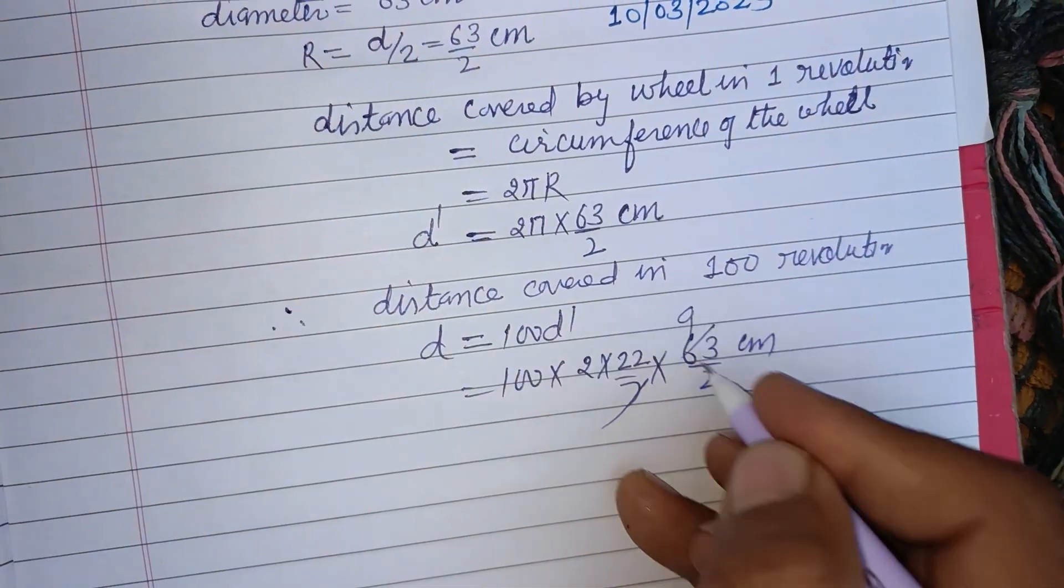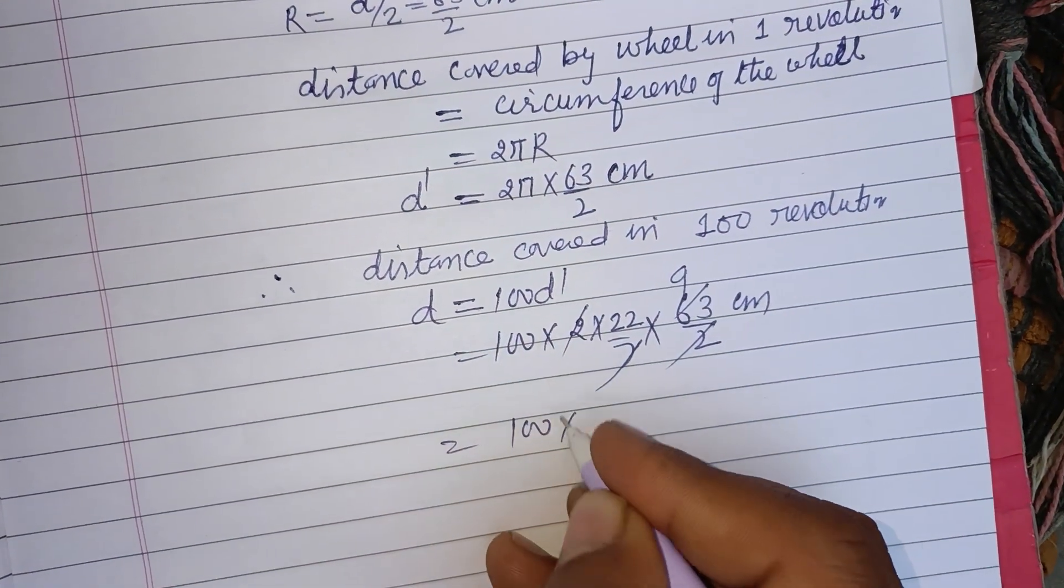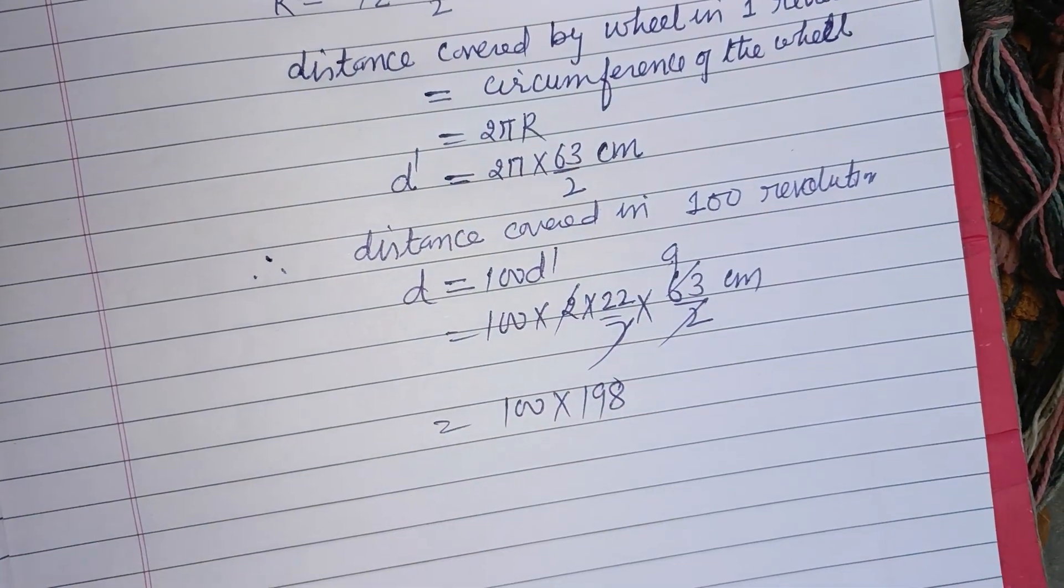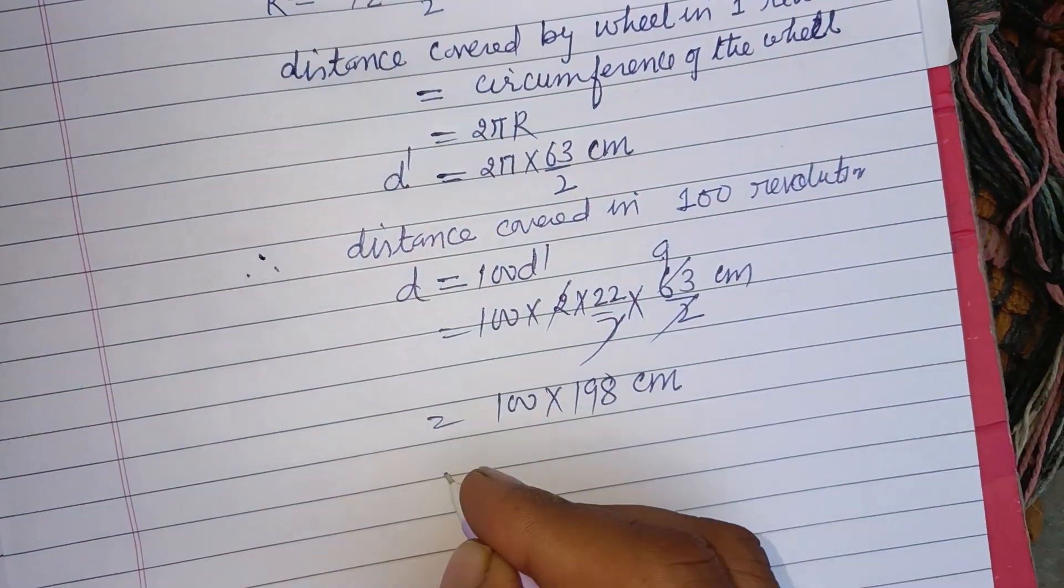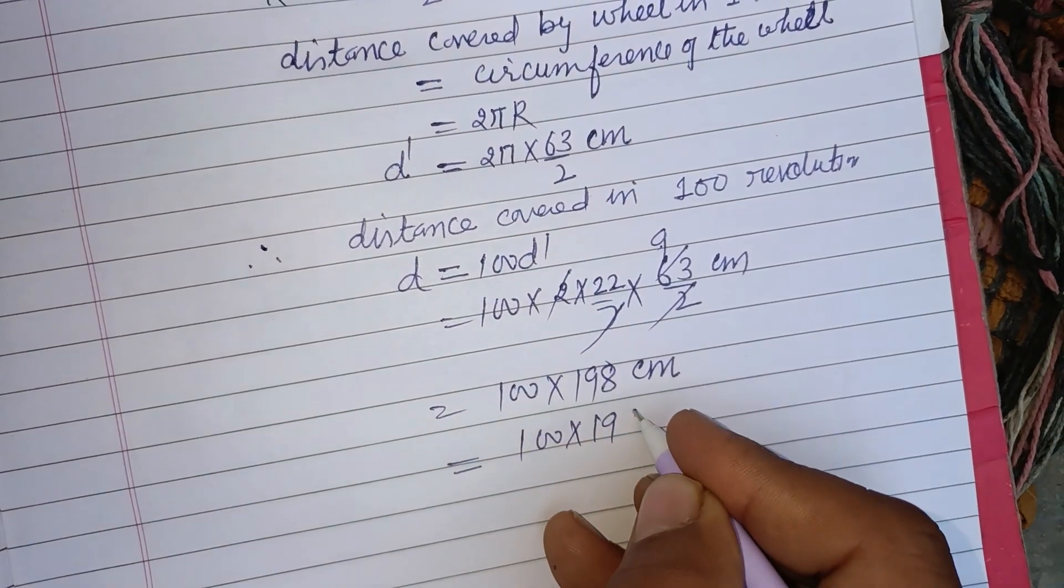So 7 and 63 cancel. This is 100 into 2 into 22 into 9, which equals 19,800 centimeters. And if you divide it by 100, you will get the distance in meters.